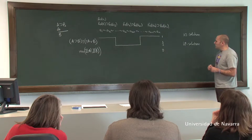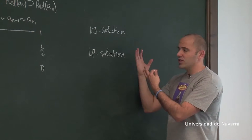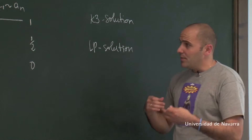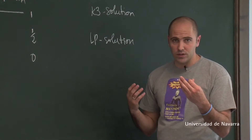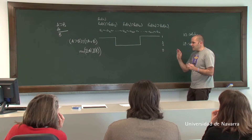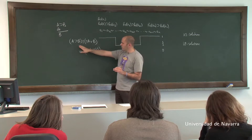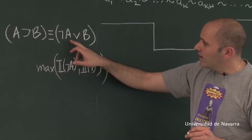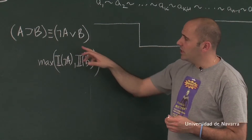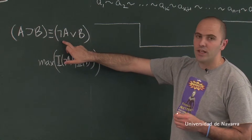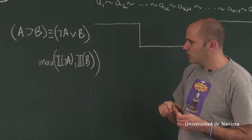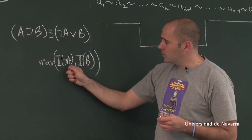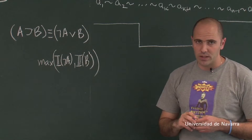When we go back to K3 and LP, these logics are going to help us explain what's going on in the sorites series, but they will give us very different results. Let's concentrate on the semantics. A conditional A→B — the material conditional — is equivalent to the disjunction of the negation of the antecedent and the consequent, and this is going to have the value of the maximum between ¬A and B.